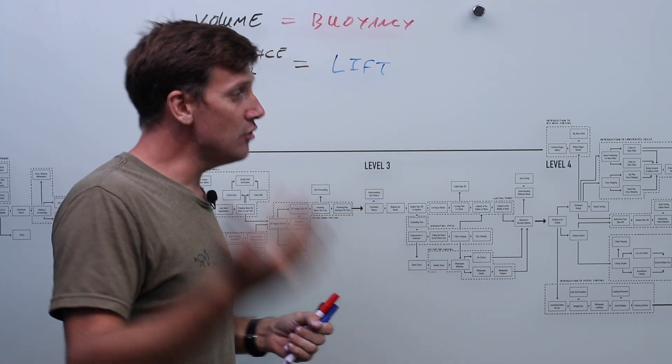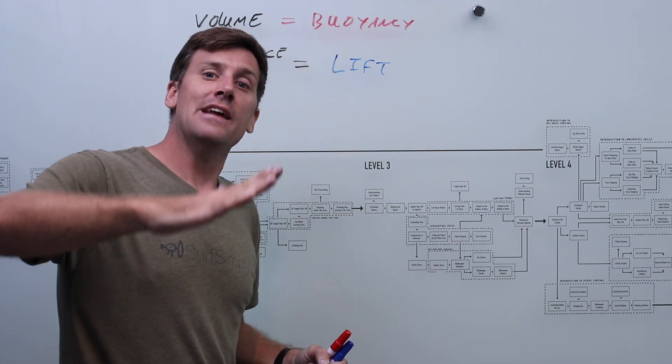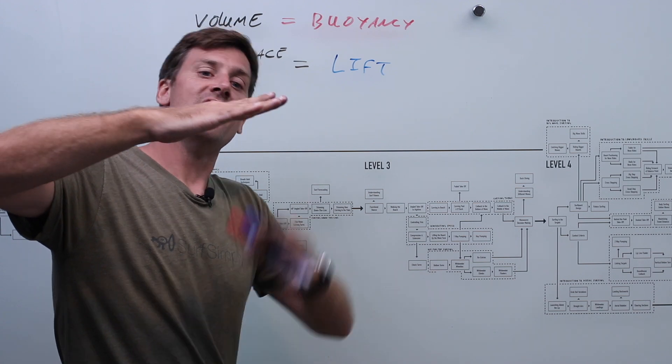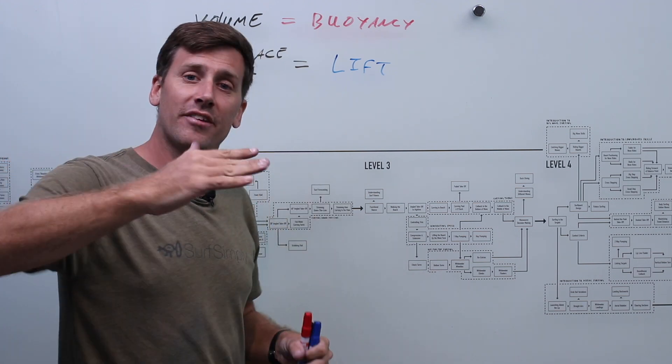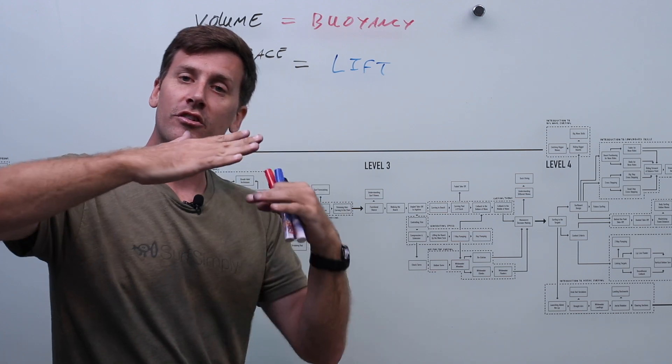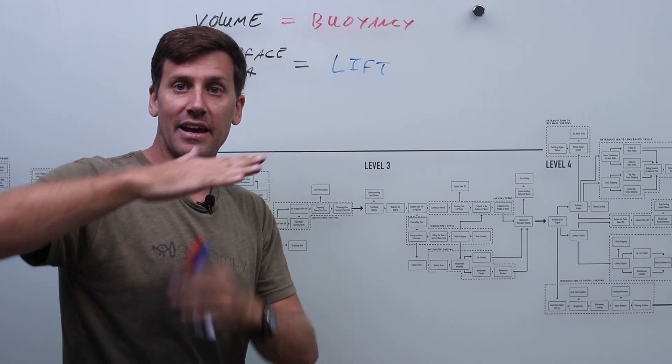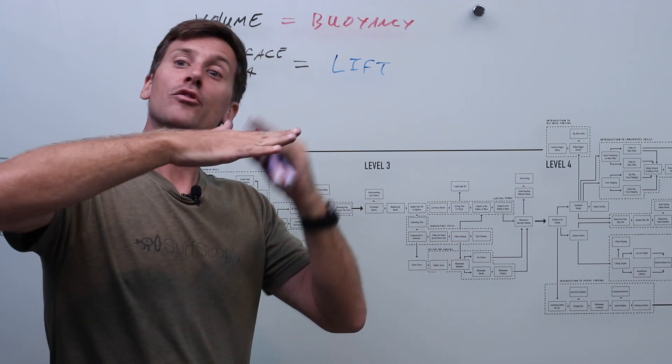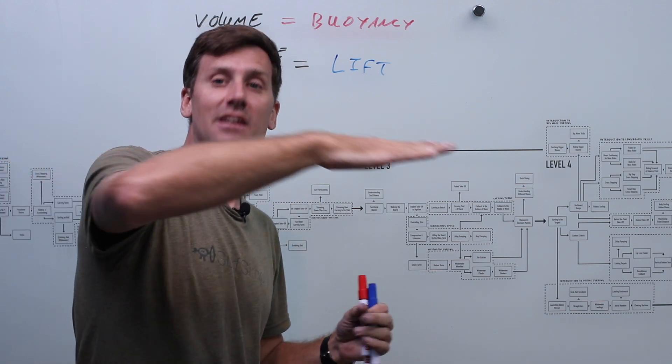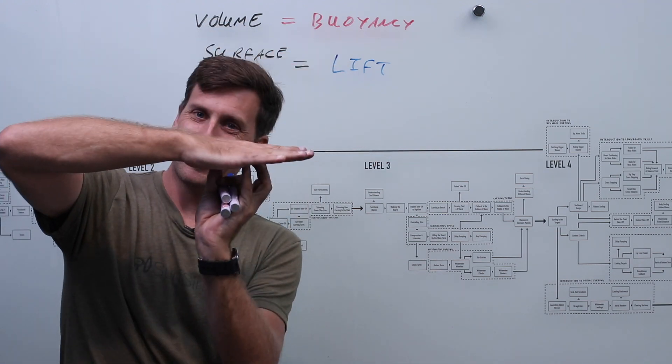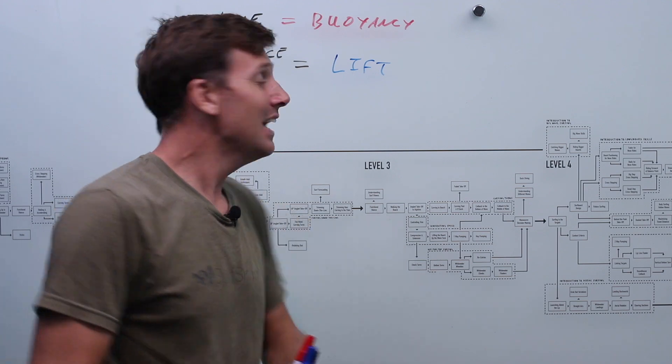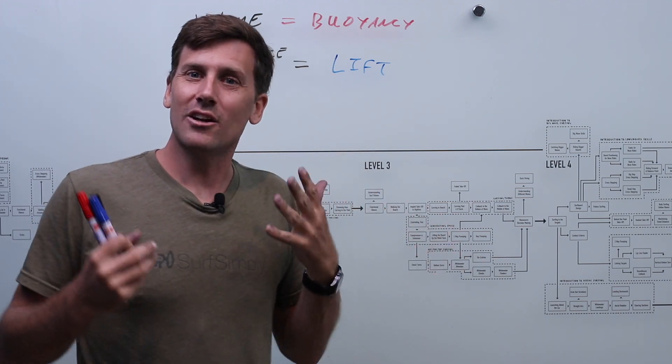Now, the interesting thing is that as the board lifts up out of the water, there is less surface area in contact with the water, which would reduce the amount of lift generated. However, as we lift out of the water, there is also less friction, which means our speed increases, which means the smaller surface area generates more lift. As you can see, this gets quite complicated. The really nice thing is it's kind of a self-balancing system.